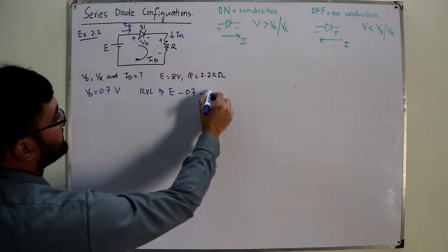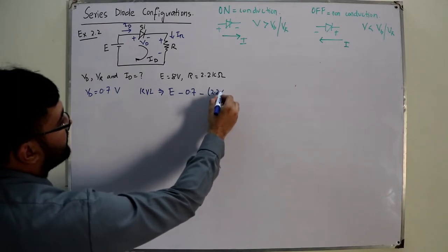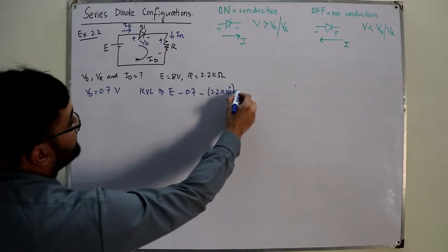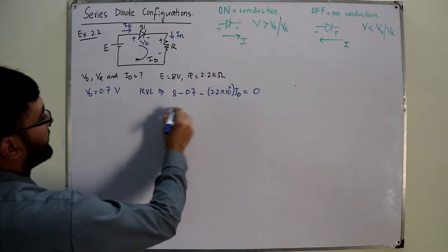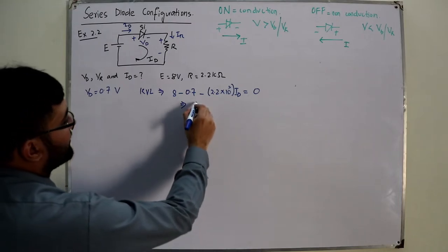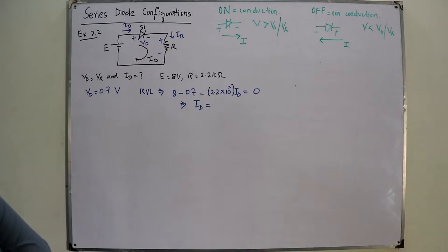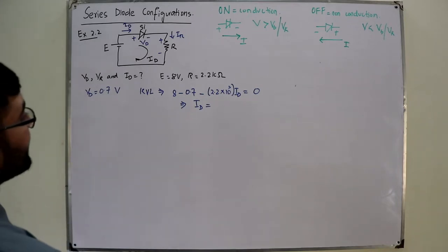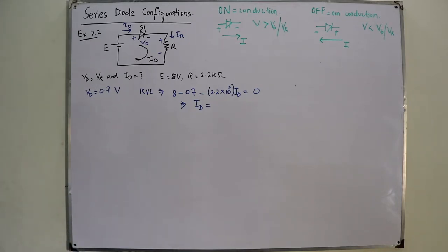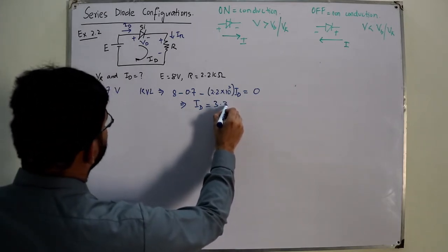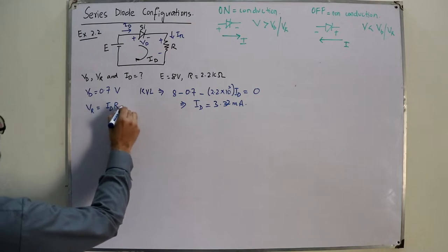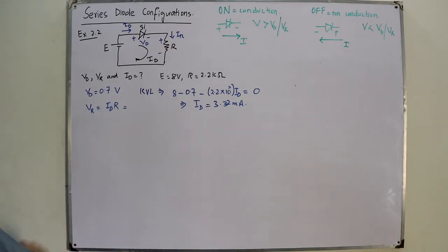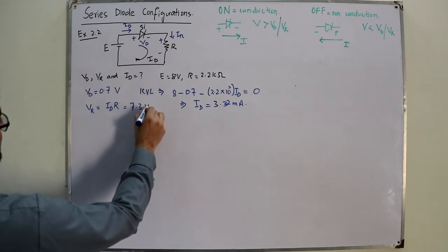Solving the KVL equation: 8 − 0.7 − (2.2 × 10³ × ID) = 0. This gives ID = 3.32 milli-amperes. Then VR = ID × R, which comes out to 7.3 volts. Please cross-check the values.